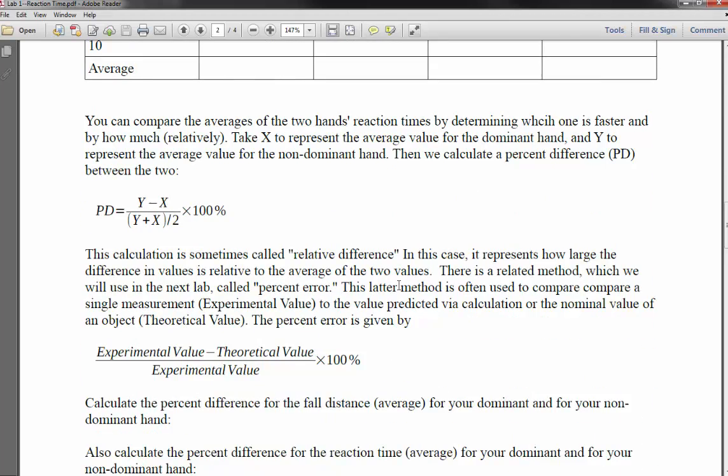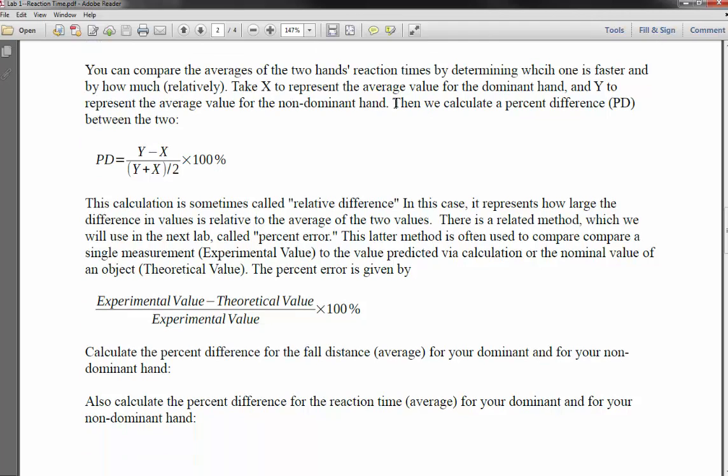So the same thing that you just did, do it ten more times. Get the fall distance and then calculate the reaction time. And then do it for your other hand. Fall distance, reaction time. The calculations are all the same that I just did. And so once you've done that, you can calculate what's called the percent difference between the two. Percent difference is basically going to be, if you're just comparing two numbers, so there's no theoretical value or experimental value per se here. They're both experimental values, if you will.